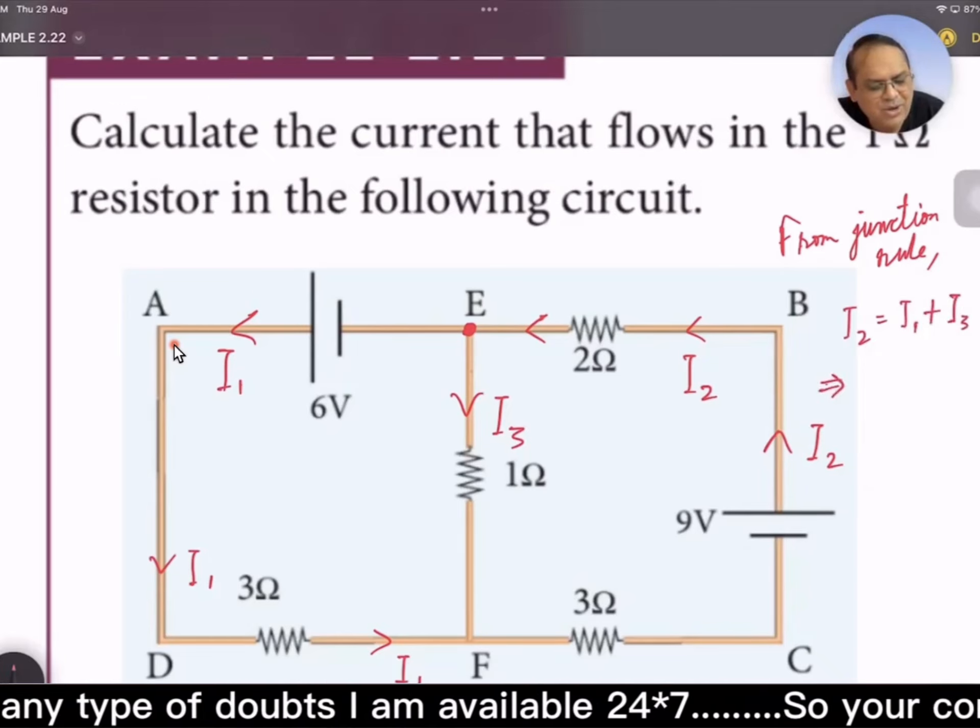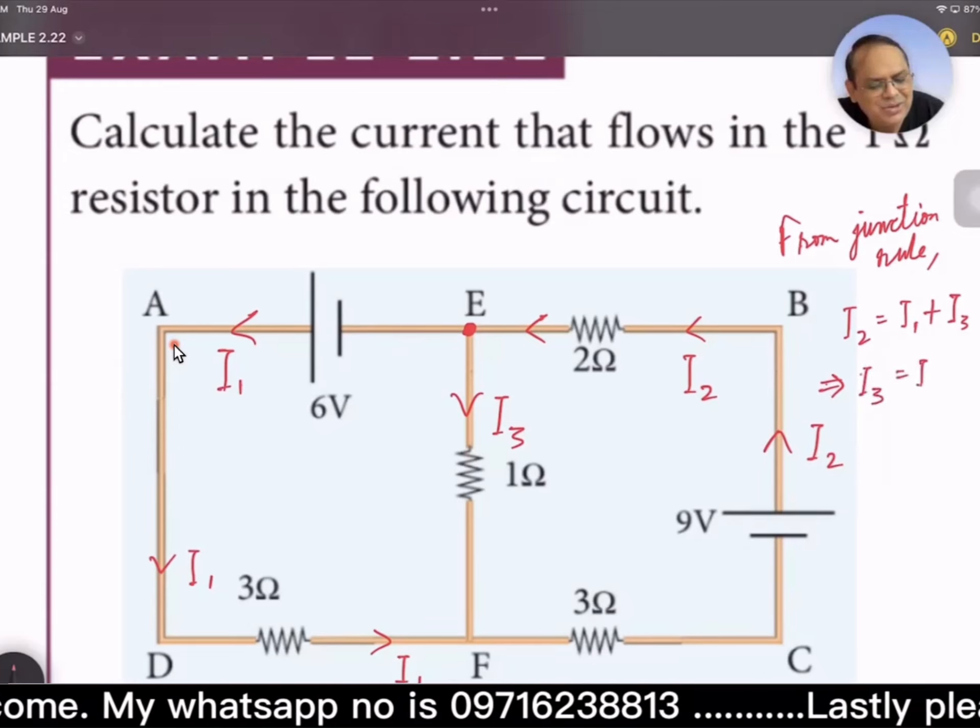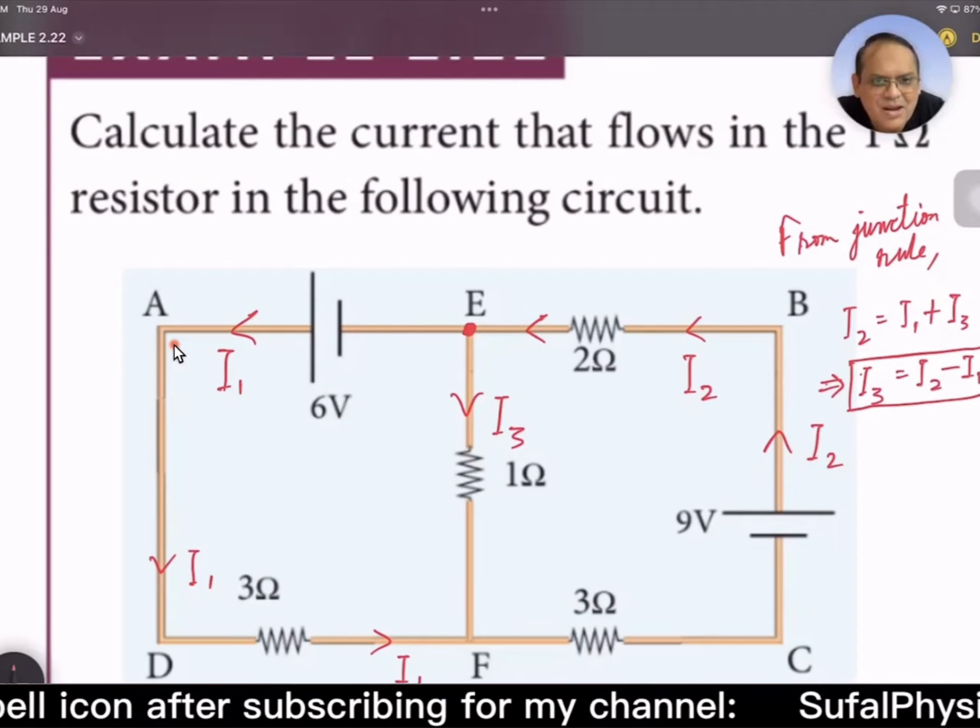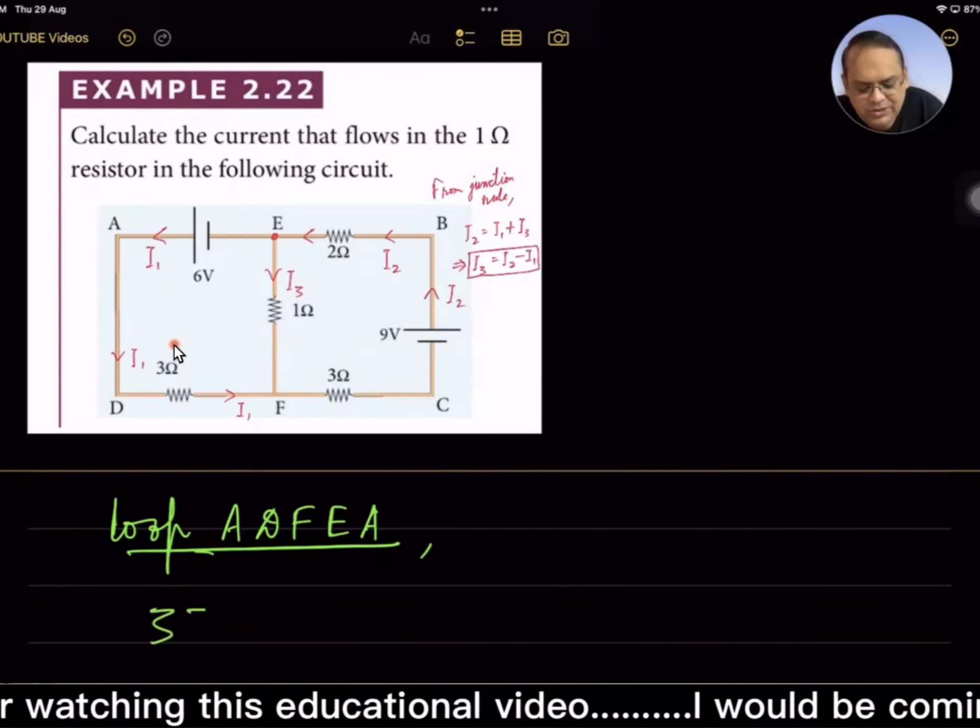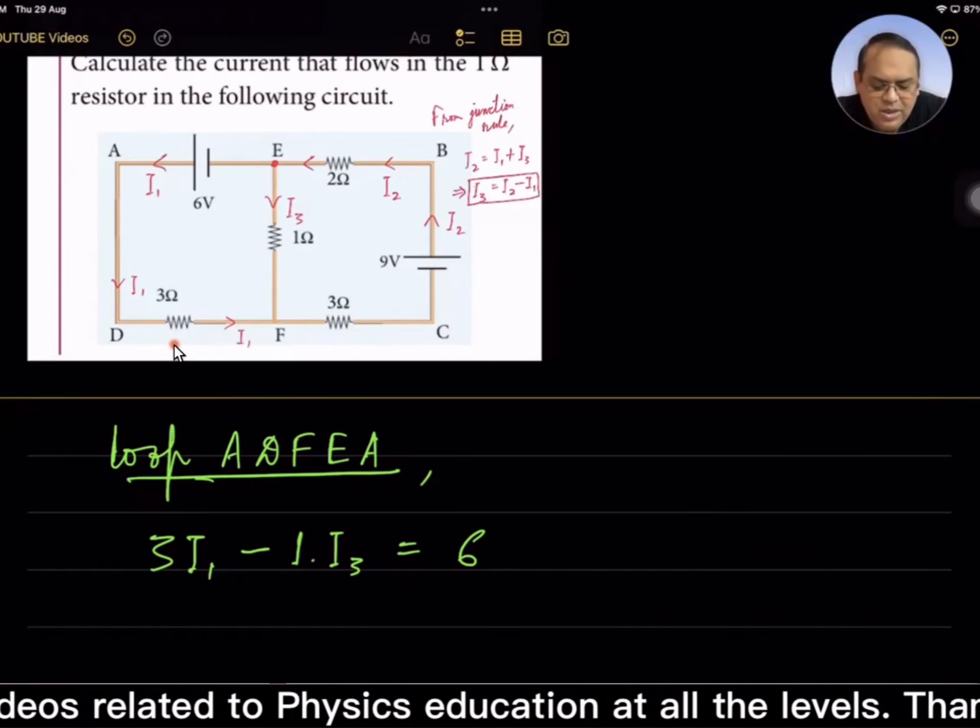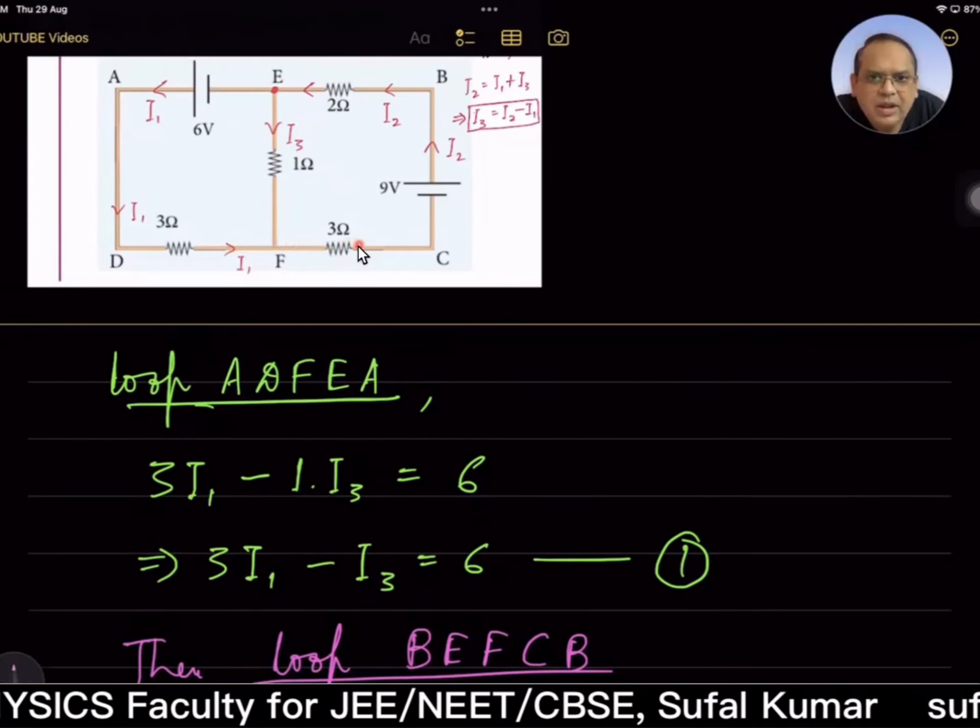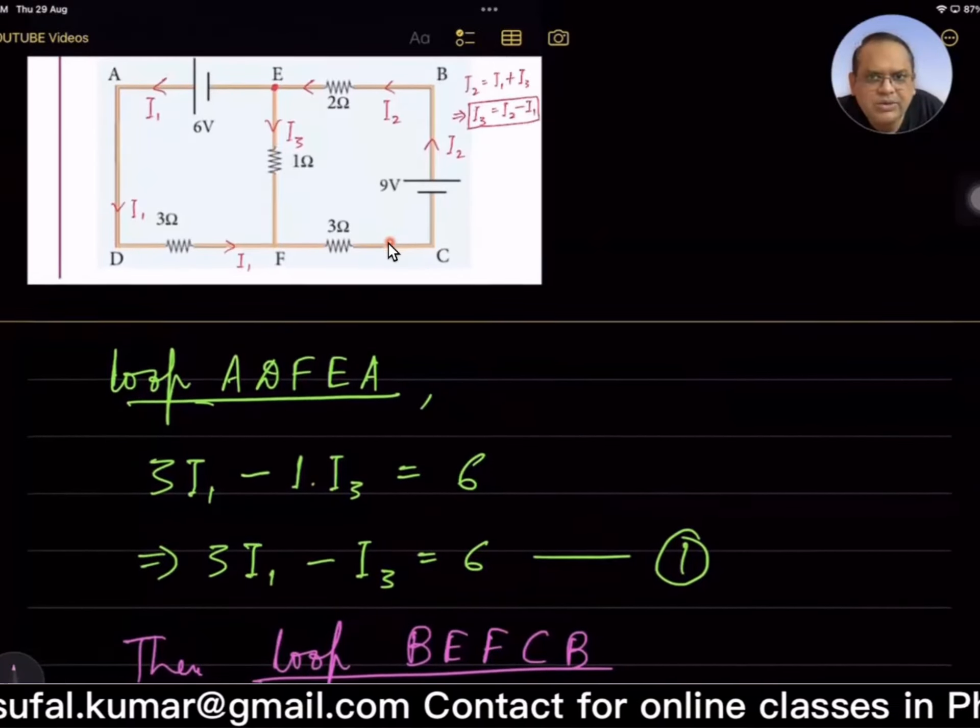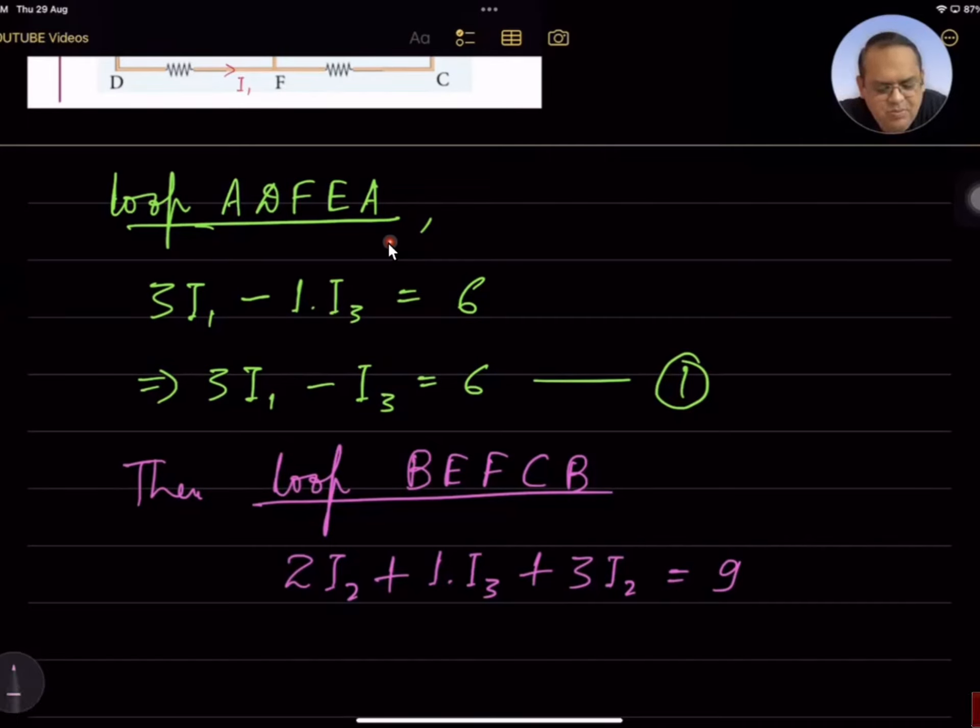Let's see whether we would be able to apply this equation for our answer. For loop ADFEA, if we write the equation: 3I₁ - 1I₃ = 6. For the other loop, I₂ times 2 ohm, and current is going this way and we are also traveling along the direction of current, so 2I₂ + 1I₃ = 9 volts.